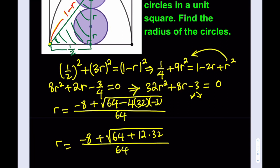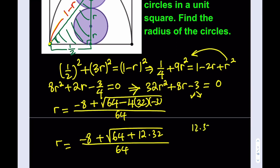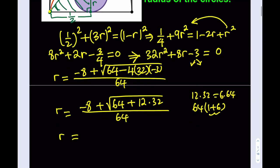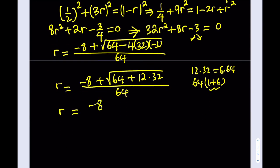Now notice that here we can factor out a 32, but that's not going to be super helpful. I'd like to take out a 64. And we can do that because 12 times 32 is 6 times 64. If I factor out 64, it's going to look like 1 plus 6, which is 7. So this expression can be written as negative 8 plus, so 64 is going to be square root, that's going to be 8 root 7, because we have 7 inside the radical, all over 64.